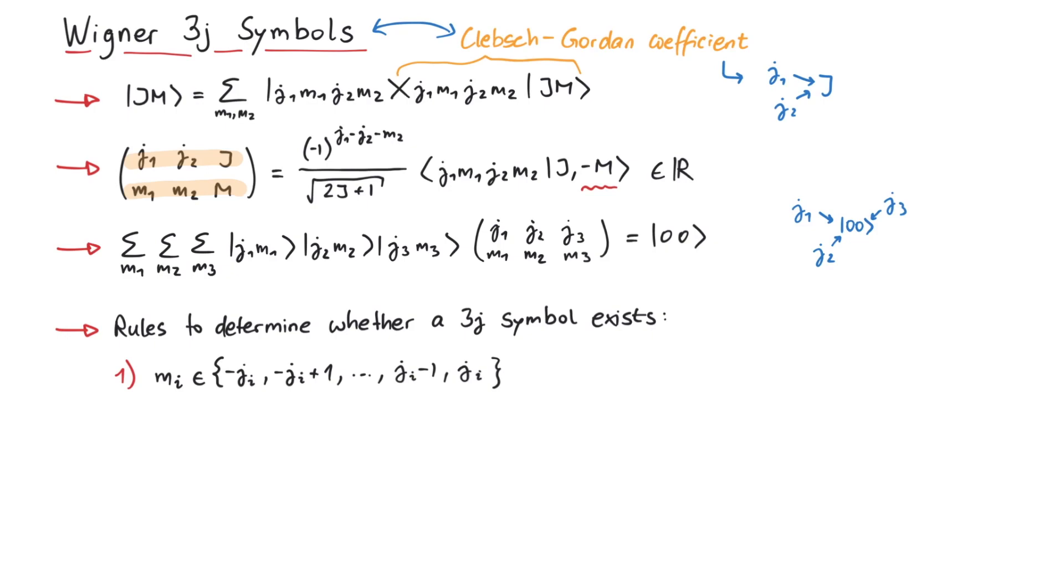Second, the sum of the values in the bottom row has to be zero. This is basically the same condition as for Clebsch-Gordon coefficients, where the magnetic quantum numbers had to match. Finally, the values in the upper row have to fulfill the so-called triangular relation, which is the usual relation for adding angular momenta.